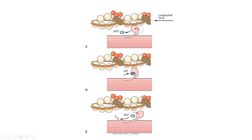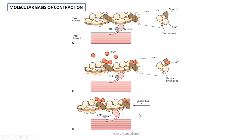The binding of ATP to the myosin head releases the myosin from the actin molecule, thereby allowing the muscle to relax and come back to the relaxed or cocked state. This is brought about by the hydrolysis of ATP. When ATP is hydrolyzed, the inorganic phosphate is released whereas the ADP remains bound to the myosin head, forming the cocked state.